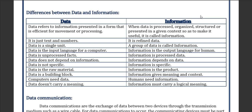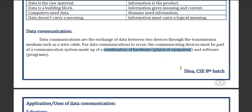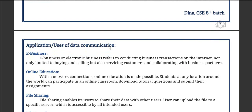The next topic is data communication. The movement of data from one end to another is known as data communication. It is the exchange of data between two devices through a transmission medium, such as a wired cable or anything else. Data communication can be combined with hardware like physical equipment and software like programs and applications.